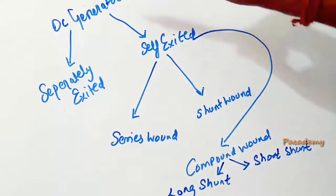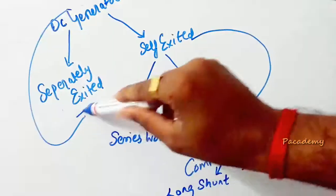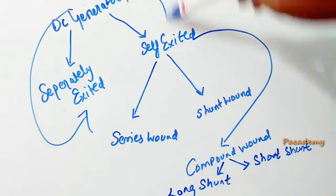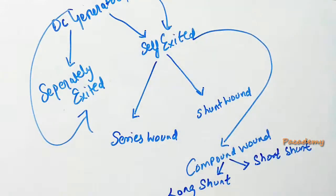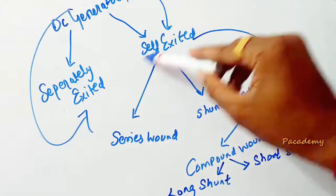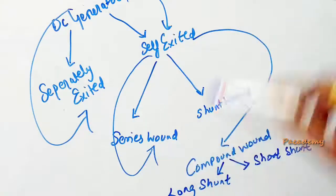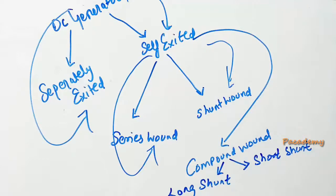The DC generator can be classified as separately excited and self-excited. The self-excited generators can be classified as series wound, shunt wound, and compound wound. The compound wound has two types: long shunt and short shunt.